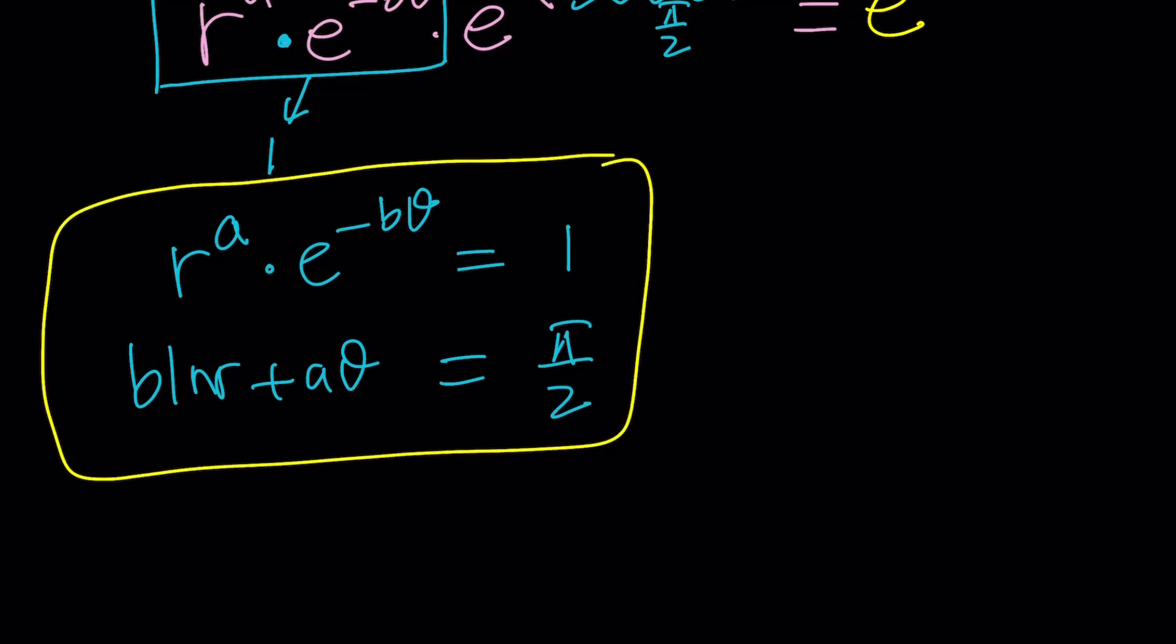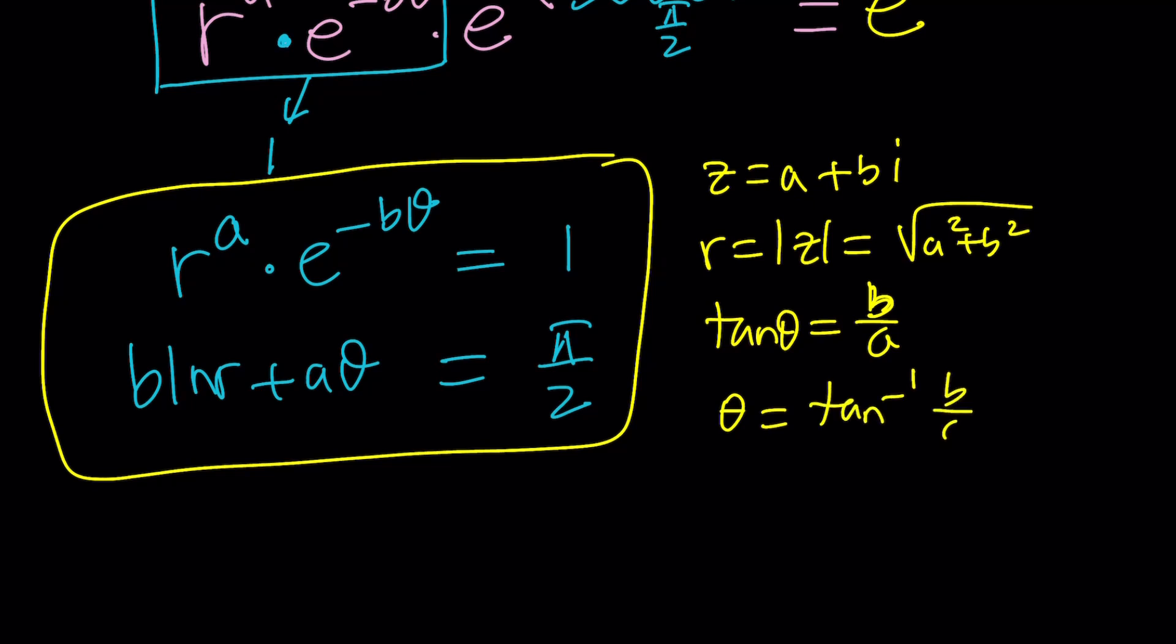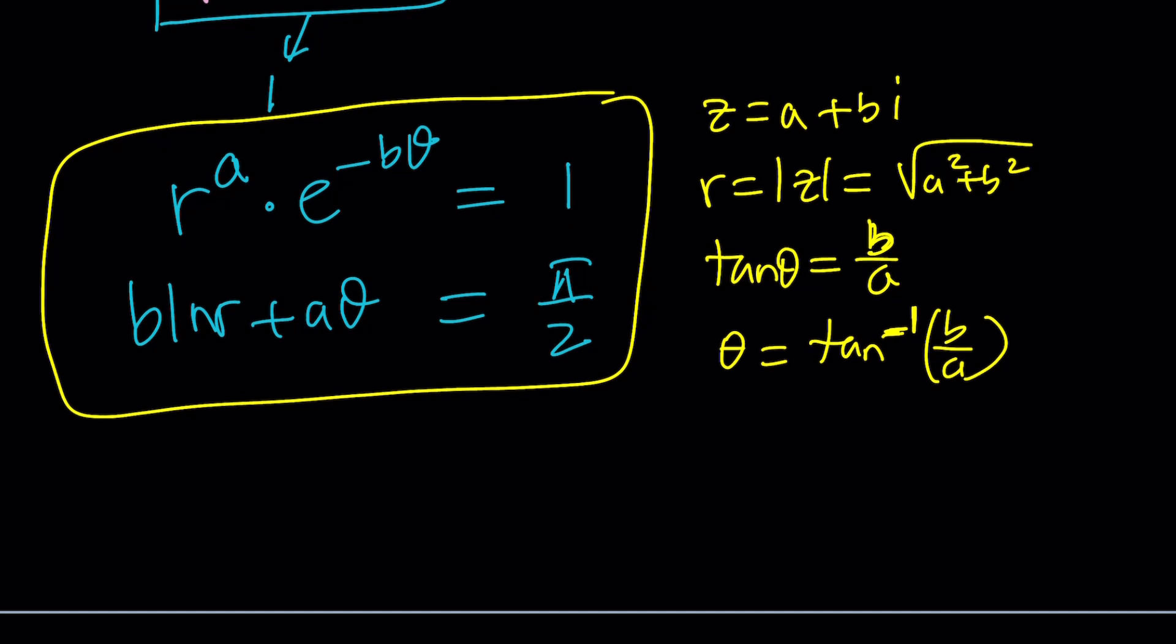Here's how we can do it. If Z is equal to A plus B I, R is the absolute value of Z which is the square root of A squared plus B squared. And we know that tangent theta is B over A so we can kind of replace theta with tan inverse of B over A. Of course this is not always possible. Just depends on the quadrant. Well let's just assume for simplicity's sake that we're in the first quadrant and everything works nicely. Okay? All right. Now we got everything we need now let's go ahead and replace R with this and theta with that. Ready?